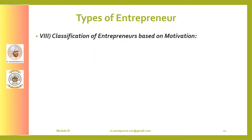Classification of entrepreneurs based on motivation is based upon the motivation of the entrepreneur to start a new venture. This classification has two broad categories: first generation entrepreneur and family business entrepreneur. First generation entrepreneurs do not have any family business prior to starting their own business venture. Examples include Dhirubhai Ambani of Reliance, Kiran Mazumdar-Shaw of Biocon, Narayana Murthy of Infosys, and Naresh Goyal of Jet Airways.